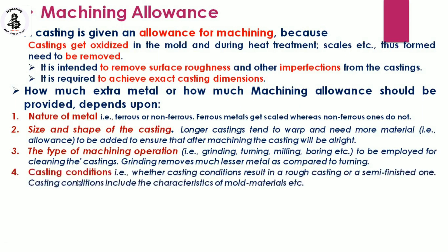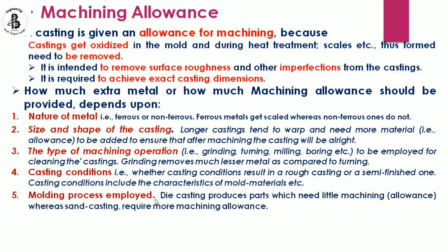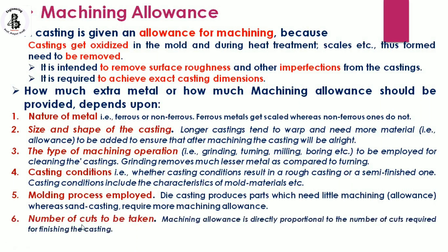Fourth, casting conditions — whether they result in rough or semi-finished castings, including characteristics of the mold material. Fifth, the molding process employed — die casting parts need little machining allowance, whereas sand castings require more. Additional factors include the number of cuts to be taken, since machining allowance is directly proportional to the number of cuts required, and the degree of surface finish desired on the cast product.